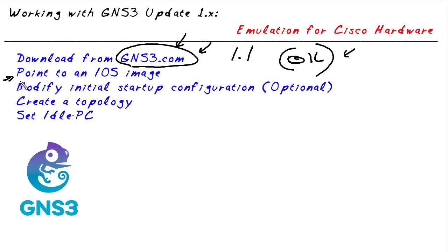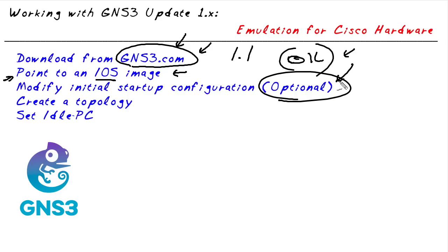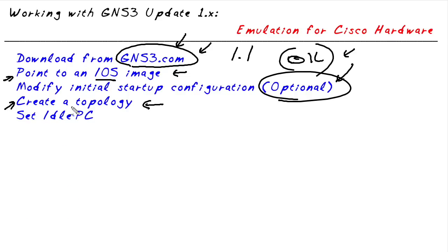Once it's installed and running, we're going to point to an iOS image, which is done slightly differently than in previous versions. If we want to modify the startup configuration — the basic configuration for a brand new router on a new topology — we can tweak and tune that as well. Then we'll simply create a topology, and we'll want to set the idle PC at least once for our model of router. In the future, it'll remember that idle PC and we shouldn't have to touch it again for that specific model.